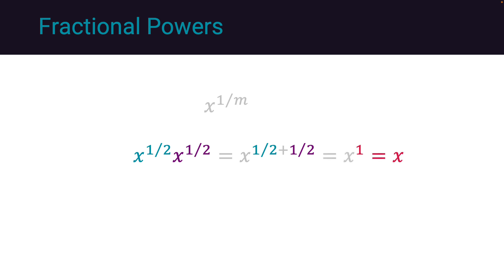The only way that x to the 1 half multiplied by itself produces x is if x to the 1 half is equal to the square root of x. In general form, x to the 1 over m is the mth root of x.